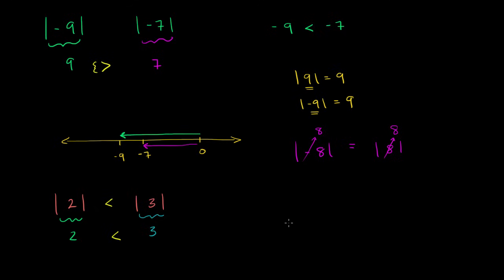Let's do a couple more examples. Let's compare the absolute value of negative 1 to positive 2. The absolute value of negative 1 is just the positive version, which is 1. So 1 is clearly less than 2 — the absolute value of negative 1 is clearly less than 2.